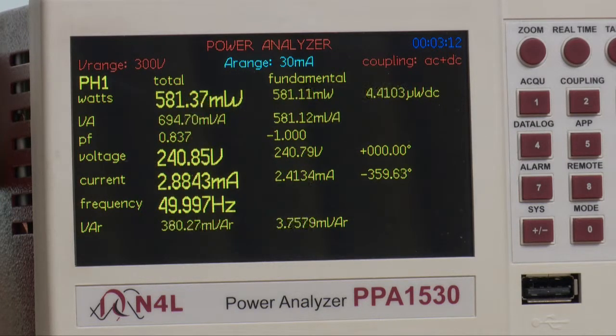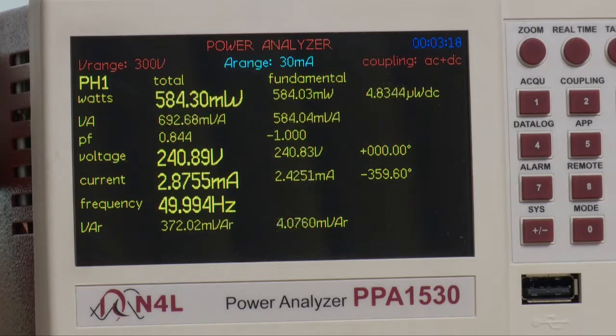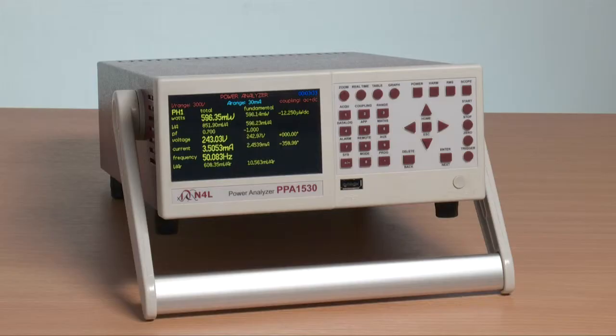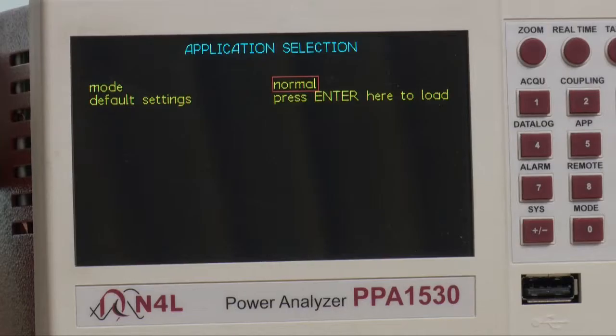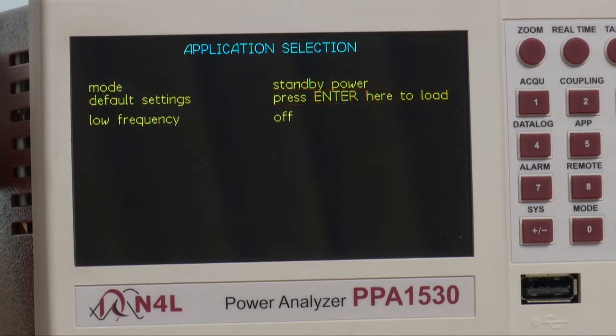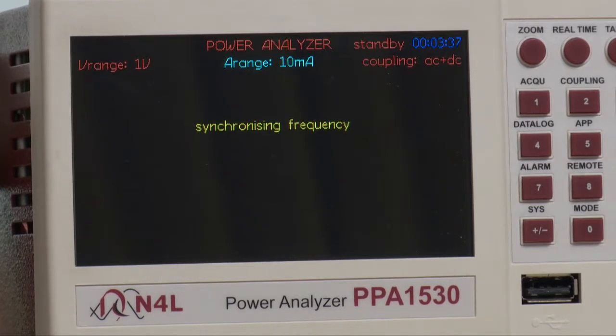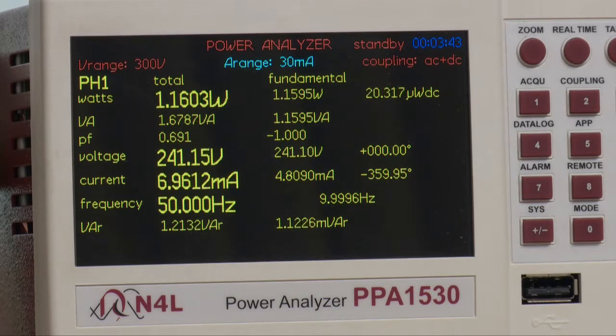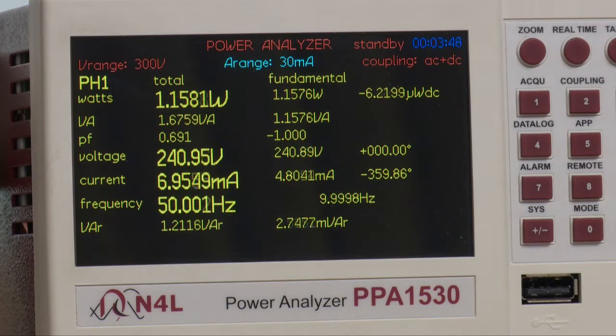This creates a challenge for switch mode power supply analysis with low-duty cycle power consumption and is usually solved by integration over time. However, Newton's 4th have a solution to this, which is a standby power mode. If we select the standby power mode in the acquisition menu, we see that the power screen changes slightly, with the addition of a second frequency. At the bottom of the screen, we now see a 10 Hz frequency, which is the period of the pulse frequency, and this period will change depending upon the frequency of the pulse.